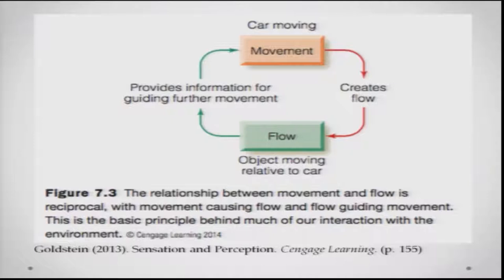The movement of the car creates flow information, and the flow information provides guidance for further movement. If you are moving fast toward an obstacle or a person crossing the road, the size of that person on your retina changes very fast with respect to the speed at which you are approaching. These are the kinds of information dynamically and almost always used by our perceptual systems — perception changes every moment and that new information is taken into account before you plan your next movement.